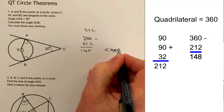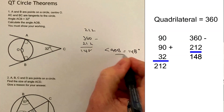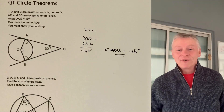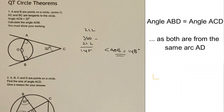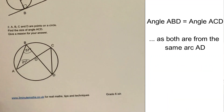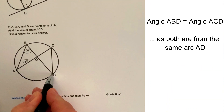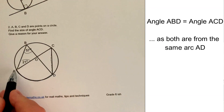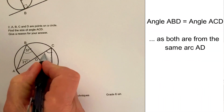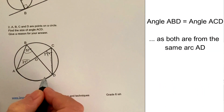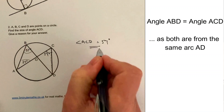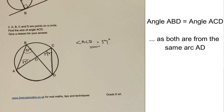Then we take that away from 360 and that gives us angle AOB equal to 148 degrees — that's the answer to question one. In question two we've got angles which are subtended by an arc AD, and this arc is common to both angles. The circle theorem is that both of these angles will be the same, so angle ACD also equals 57 degrees.